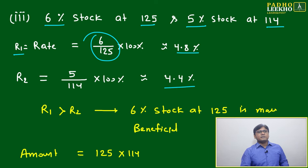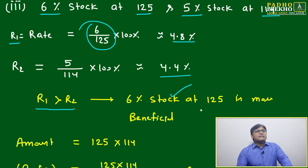The second will be 5 out of 114, that will be 4.4%. Rate of return of first is more than rate of return of second. Which stock should you take? 6% stock at 125 is more beneficial, more profitable.